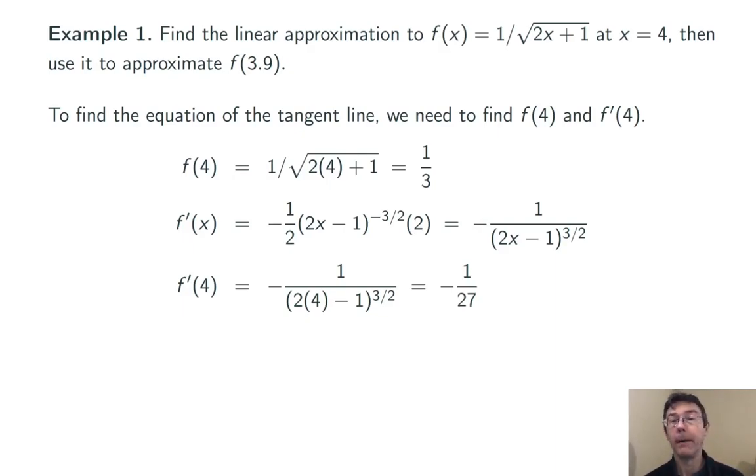Now I use the point slope form to get the linearization. L of x equals 1 third minus 1 over 27 times x minus 4.